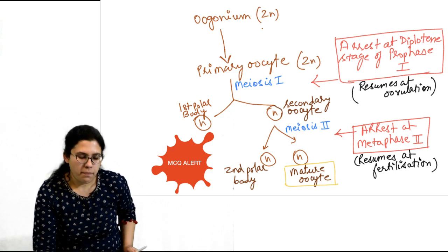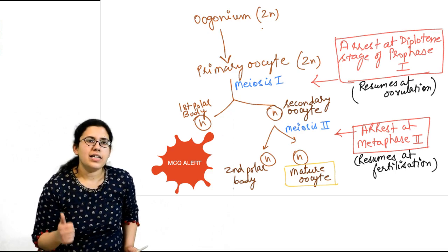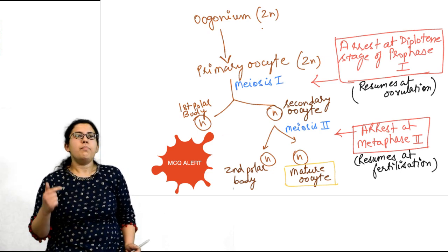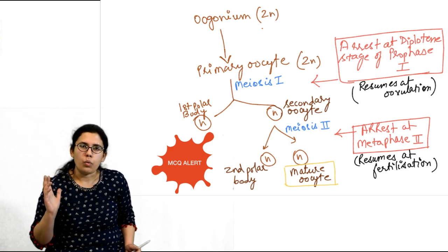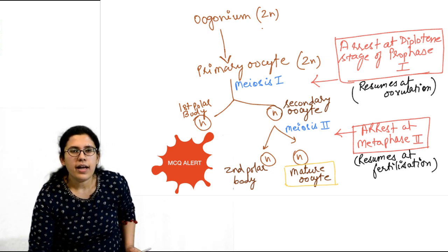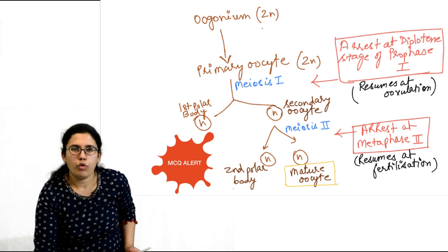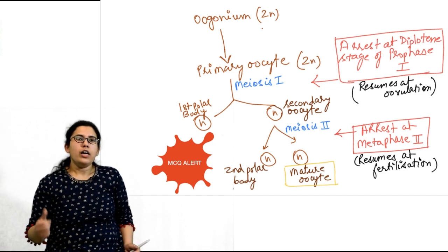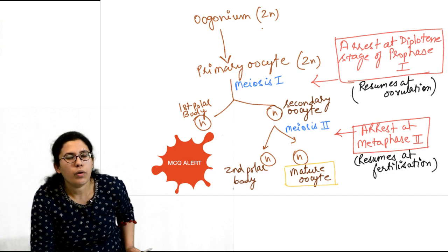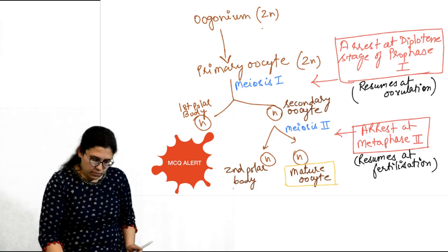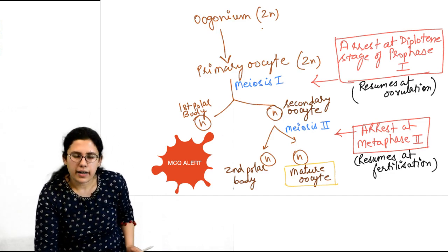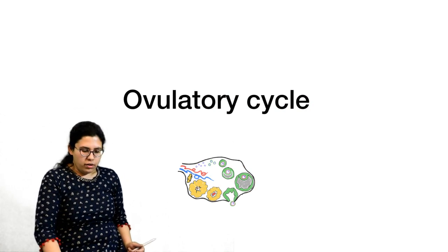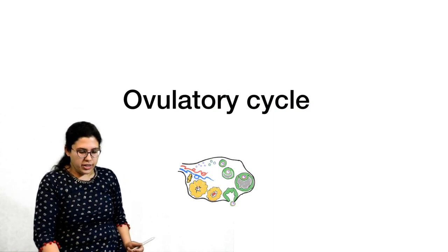Two important MCQs: the first arrest is at diplotene stage of prophase 1, and the second arrest is at metaphase 2. The first arrest is resolved at ovulation, and the second arrest is resolved at fertilization.